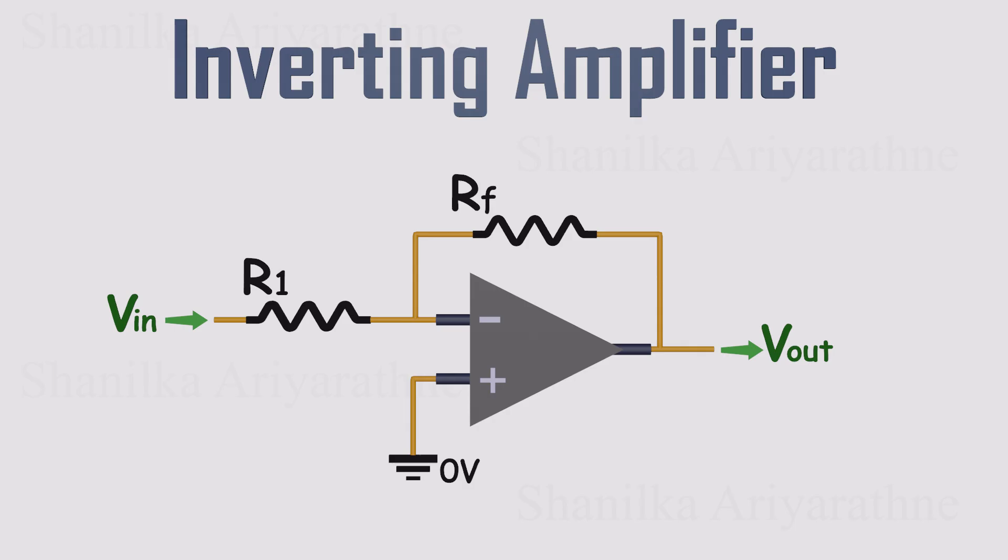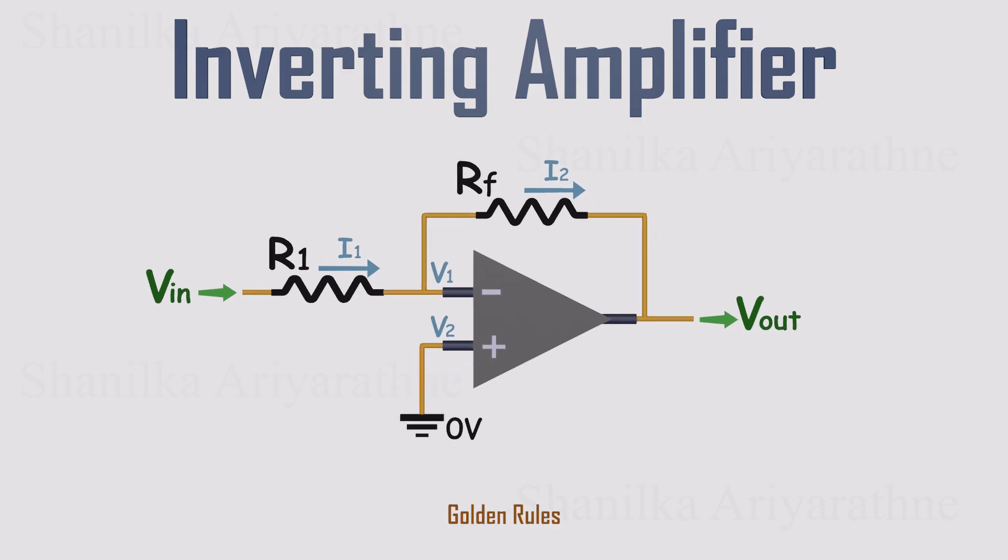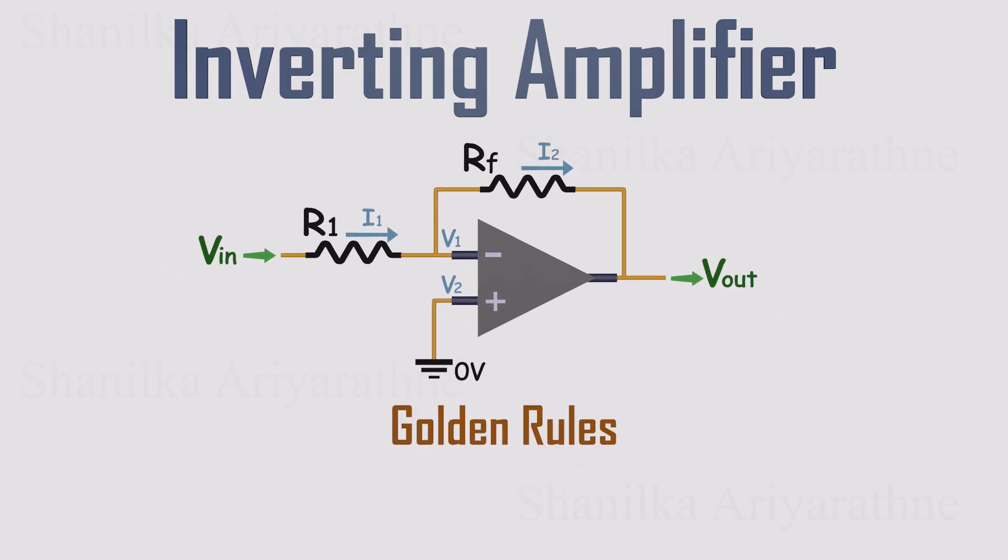Now let's analyze the inverting amplifier using the golden rules. Let's call the voltages at the inputs V1 and V2, and the currents through the resistors I1 and I2. Golden rule one: no current flows into the op-amp inputs. That means the current through R1 is the same as the current through Rf.